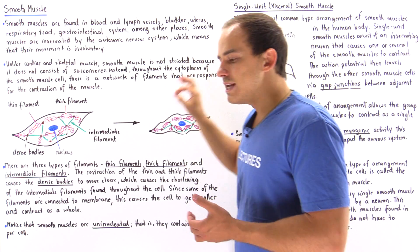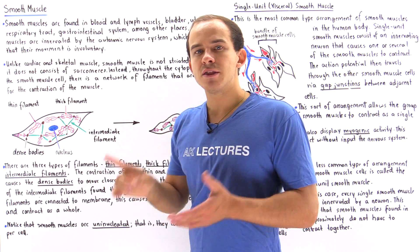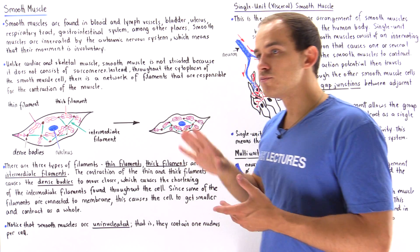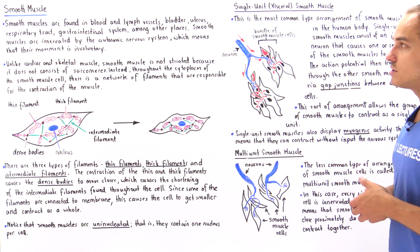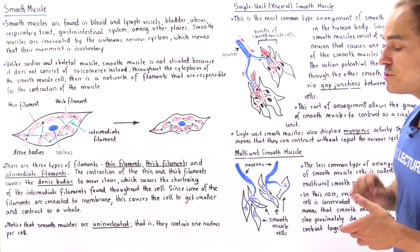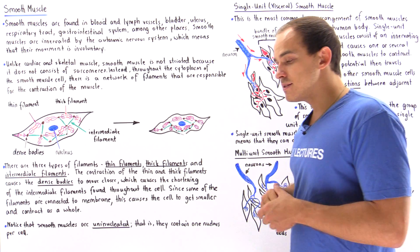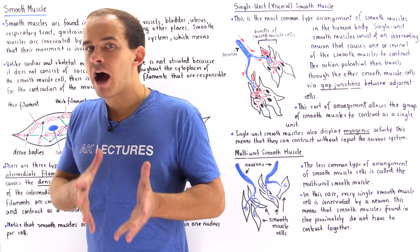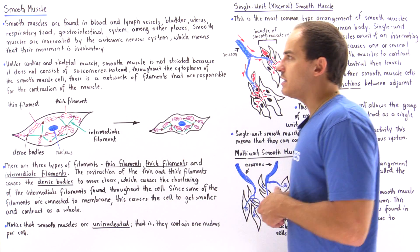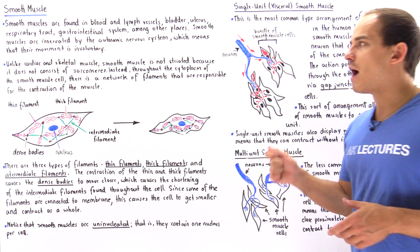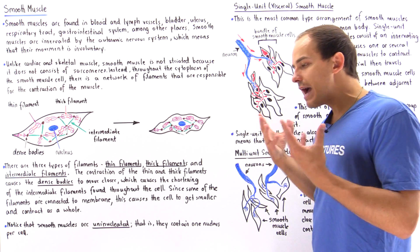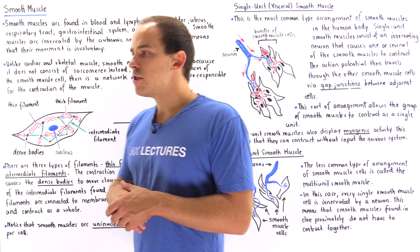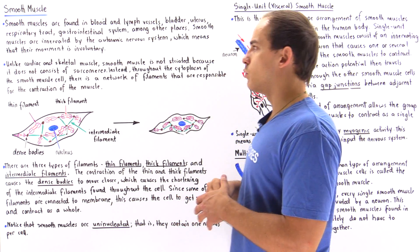Smooth muscles are innervated by the autonomic nervous system, just like cardiac muscles. This basically means that just like cardiac muscle is involuntary, smooth muscle is also involuntary — we have no way to consciously control the movement of smooth muscle.